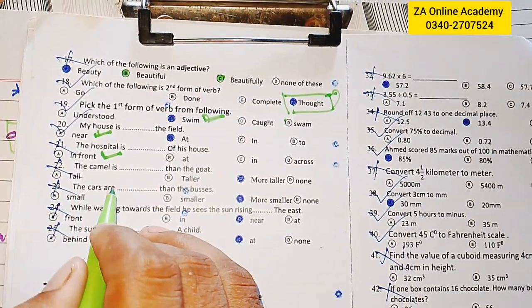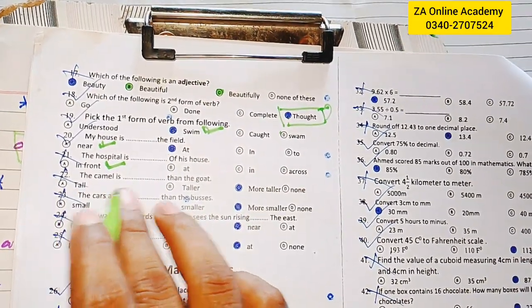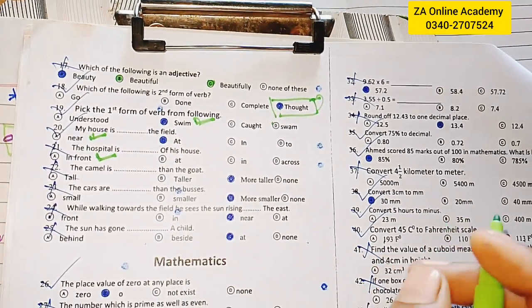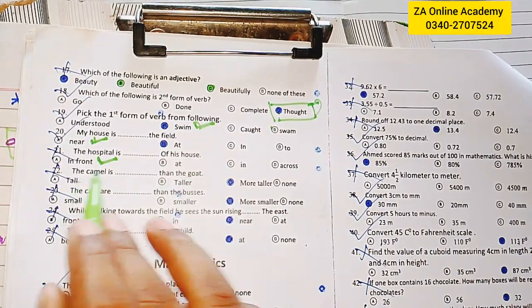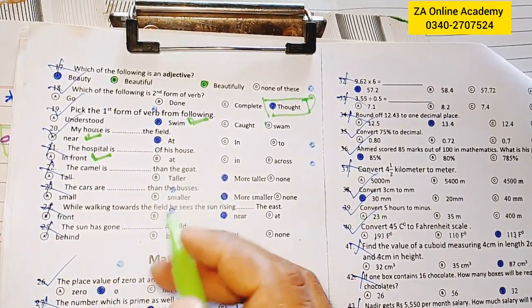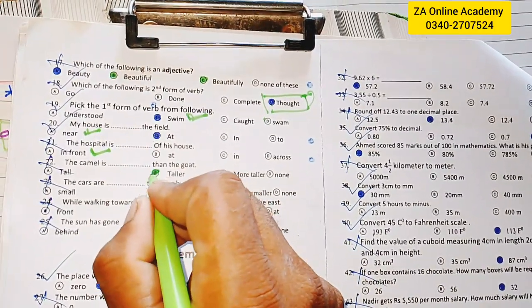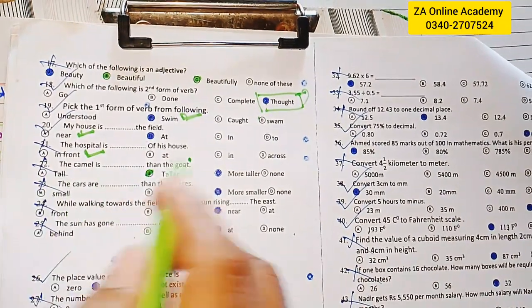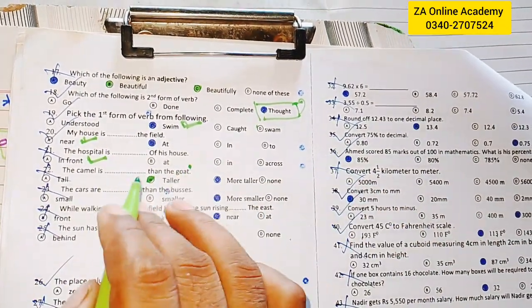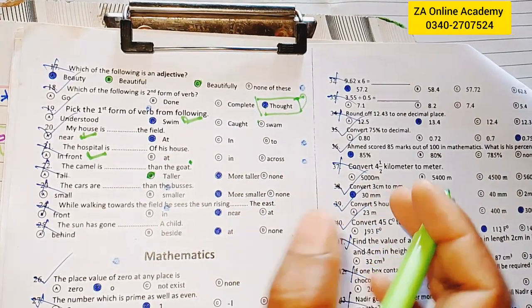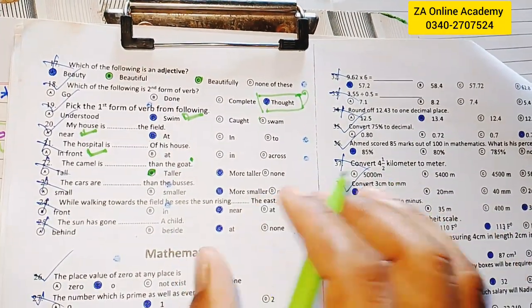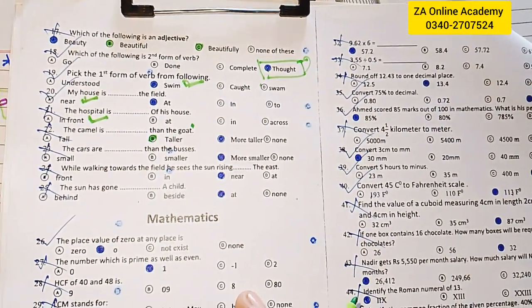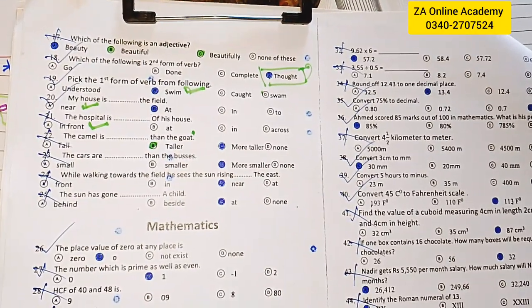The camel is taller than the goat. When comparing subjects, we use comparative degree and superlative degree.